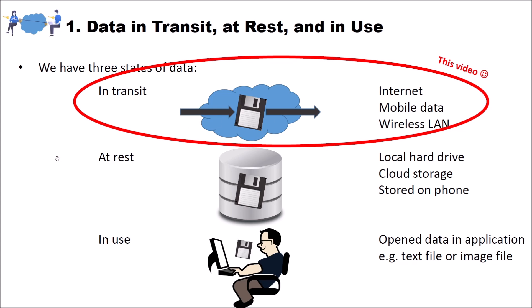The second state of data is data at rest — depicted here in some kind of database. Examples for data at rest are your local hard drive, data stored in cloud storage, or photos stored on your phone. And finally, the third state of data is data in use, depicted here as a user working on some data at his computer. An example for data in use is open data in any application — for instance, you edit a text file, or you work on an image file using an image editor.